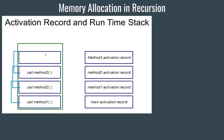Once the execution of the last method is over, it returns to its previous caller method. When it does, the activation record of that method is removed. For example, when method 4 finishes and returns to method 3, the activation record of method 3 is removed. When method 3 returns to method 2, method 2's record is removed. When 2 returns to 1, method 1's record is removed. And when 1 returns to main, the activation record of main is removed.